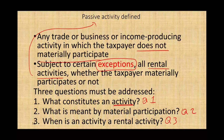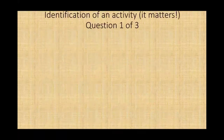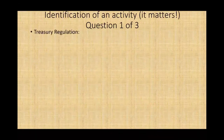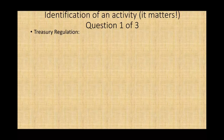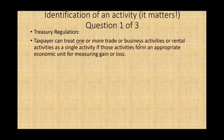The first question is: what constitutes an activity? Can you identify the activity? The treasury regulation tells you what is an activity. Taxpayers can treat one or more trade or business activities or rental activities as a single activity if those activities form an appropriate economic unit for measuring gains or losses. Sometimes you might have more than one unit, more than one business. So are these separate businesses or are they the same business?